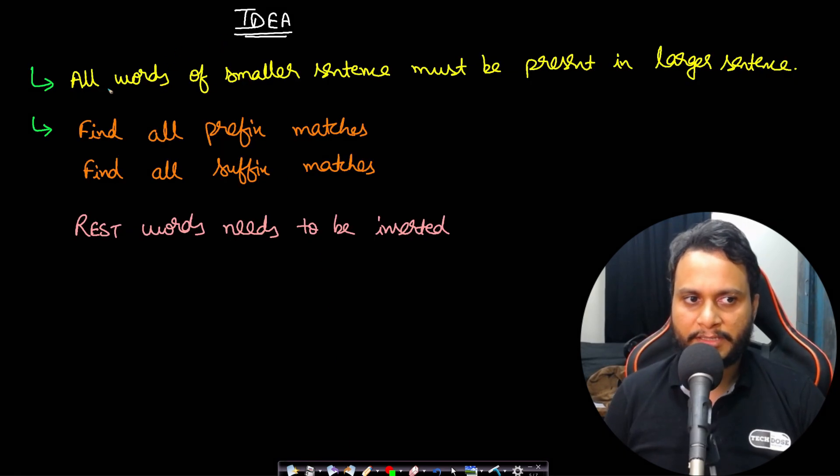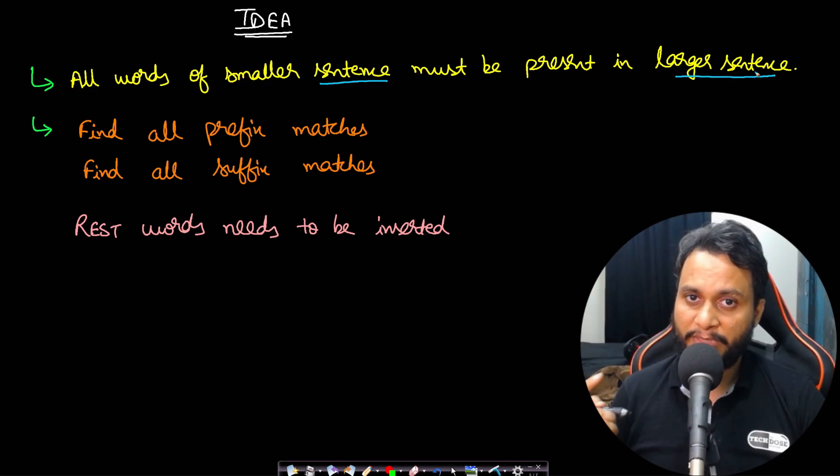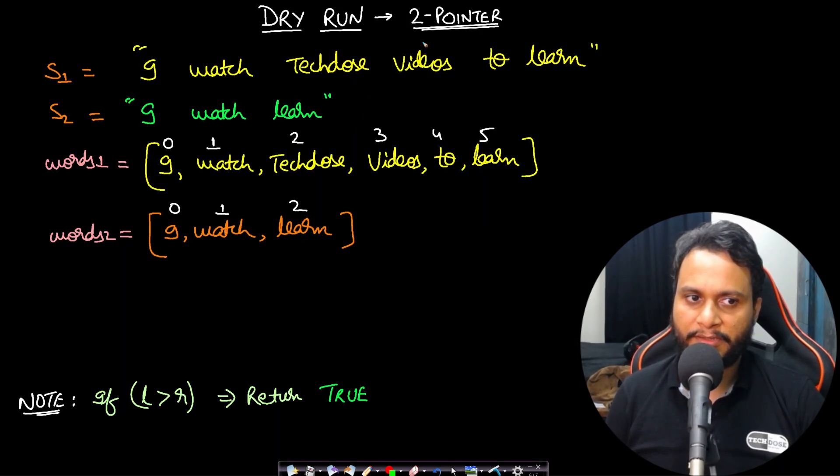So the idea is all the words of the smaller sentence must already be present in the larger sentence and that should be in order as well. We need to find all the prefix matches, we need to find all the suffix matches, and then insert the rest of the words into the smaller sentence. Let's look at the dry run.